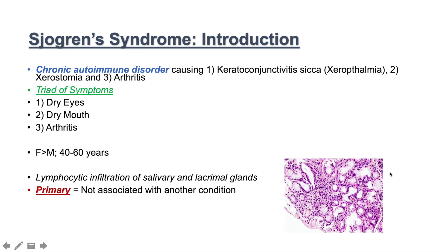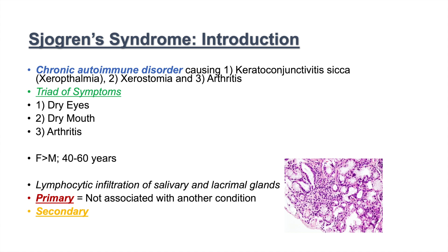There are two types of Sjogren's syndrome. Primary Sjogren's syndrome is not associated with another condition, while secondary Sjogren's syndrome is secondary to another condition. Some of those conditions can include rheumatoid arthritis, lupus, and HIV.